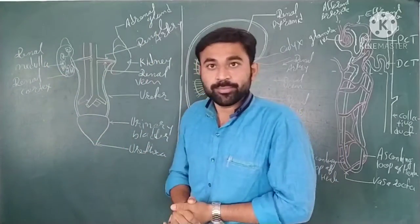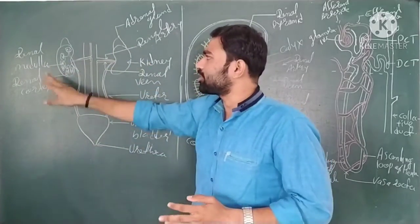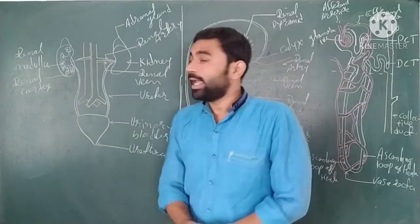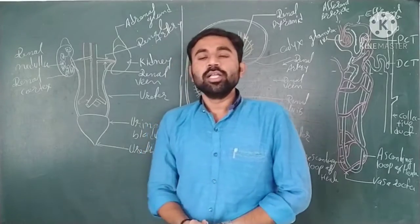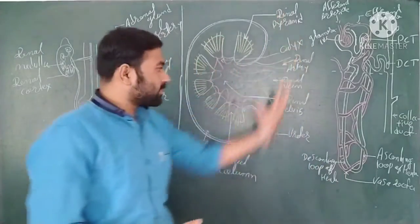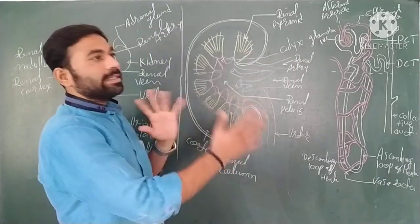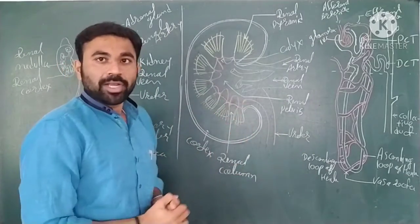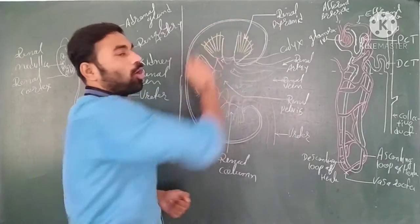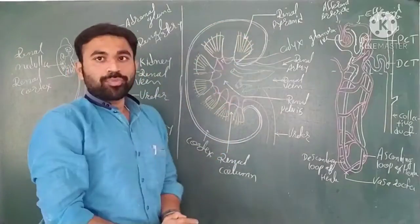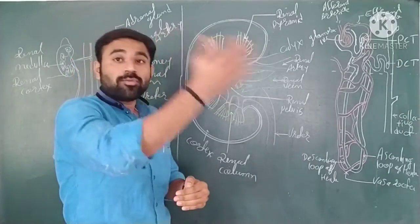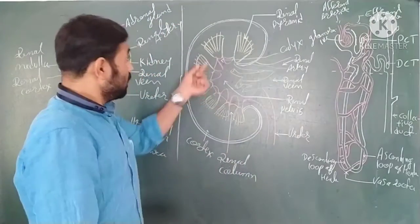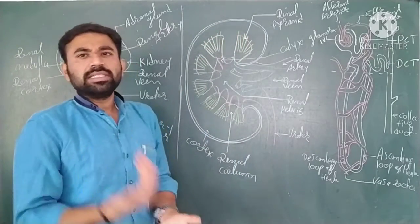In a longitudinal section of the kidney, there are two regions: the outermost region is called the renal cortex and the inner region is the renal medulla. You can easily identify these in the diagram. Outside the renal cortex there is a protective layer present on the kidney.